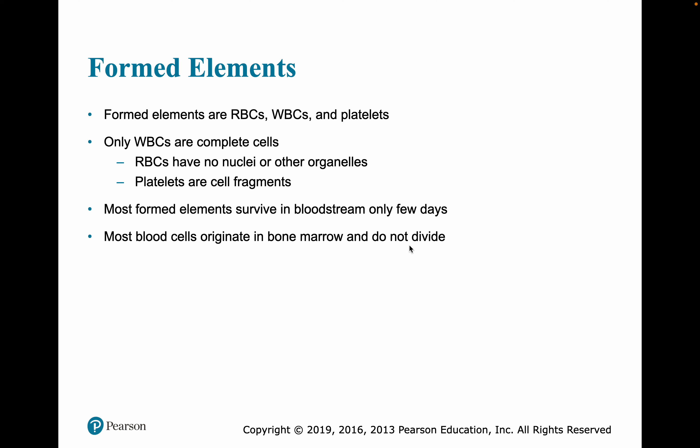The formed elements are red blood cells, white blood cells, and platelets — and only the white blood cells are true cells. Red blood cells lack nuclei or other organelles; they are fragments released from the bone marrow. Platelets are also cell fragments — parts of megakaryocytes released into the blood. Most formed elements survive in the bloodstream only a few days; all originate in the bone marrow, but most do not divide.